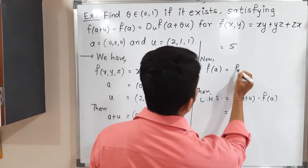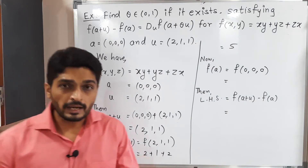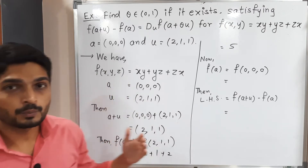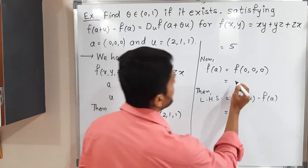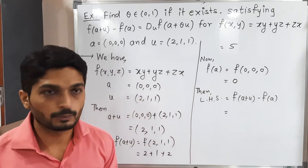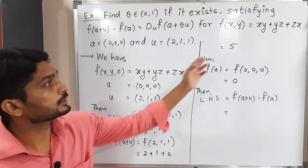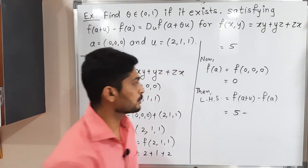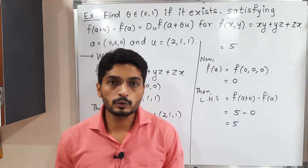Now let us find f(a) = f(0,0,0). Since all components are zero, multiplying and adding them gives zero. So f(a) = 0. Therefore, the left-hand side is f(a+u) - f(a) = 5 - 0 = 5.